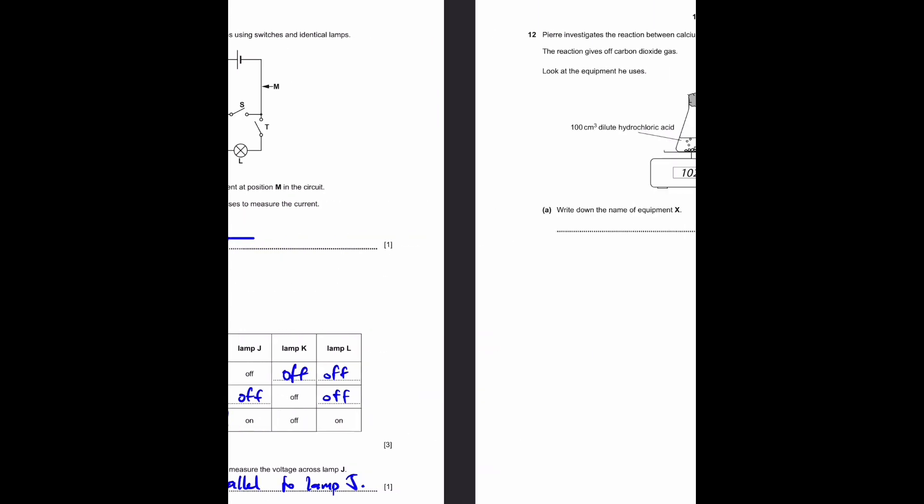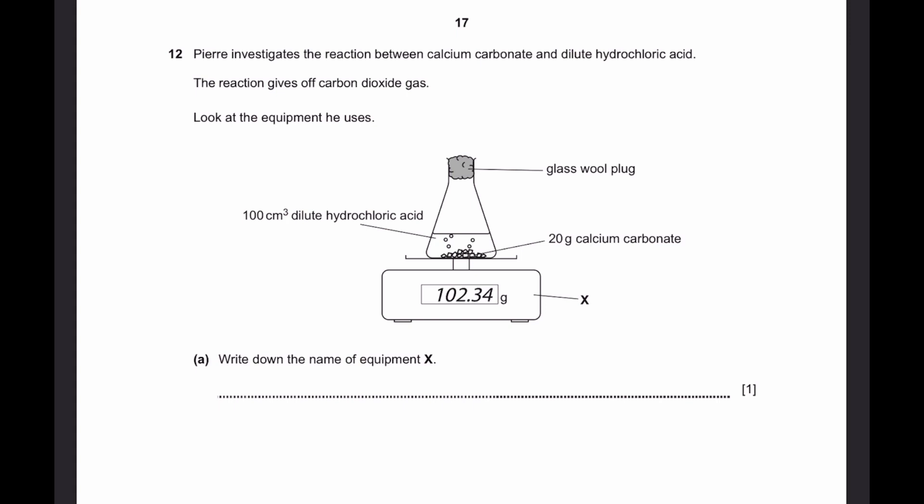Now let's go to question 12. Pierre investigates the reaction between calcium carbonate and dilute hydrochloric acid. The reaction gives off carbon dioxide gas. Look at the equipment he uses. 100 centimeters cubed dilute hydrochloric acid is in this conical flask and 20 grams of calcium carbonate as well. A glass wool plug is inserted. Part A, name the equipment X. Of course this is a weighing scale or weighing balance since it measures the mass of any item placed on it.